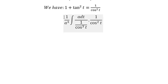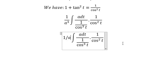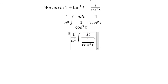Now we simplify everything. We have a and a³, so we get 1 over a². We have cos³ t and cos² t, so they will eliminate.